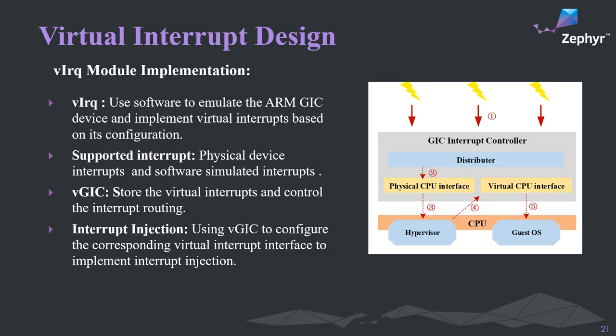In the interrupt processing module, we designed the logic to route all shared peripheral and internal interrupts to the hypervisor layer for processing. Specifically, we handle interrupt processing for each VM by building a virtual GIC device. The GIC can inject physical or virtual interrupts into the virtual machine through the vCPU interface, with the specific steps shown in the figure.